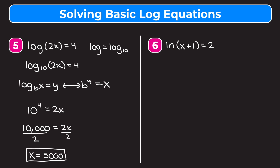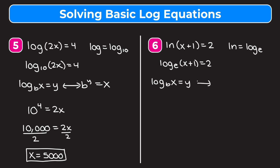Moving on to example 6, we have the special log called ln. ln is log base e, where e is a special mathematical constant that is useful when dealing with exponential and logarithmic equations. We rewrite the equation as log base e of x plus 1 is equal to 2, then review how to convert between log form and exponential form.